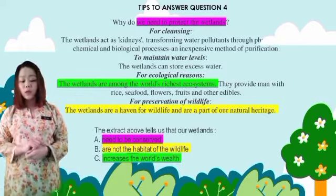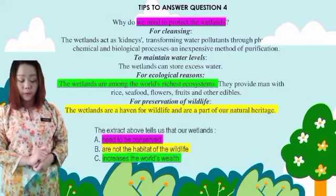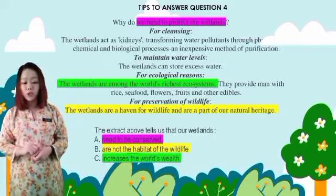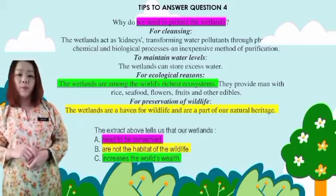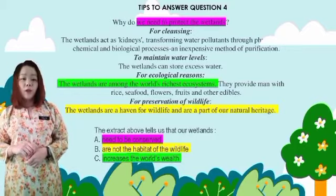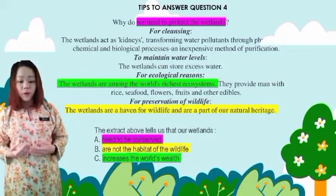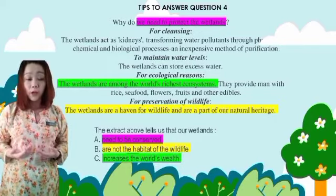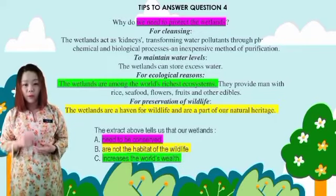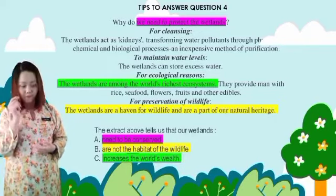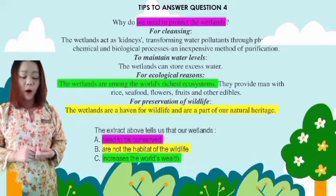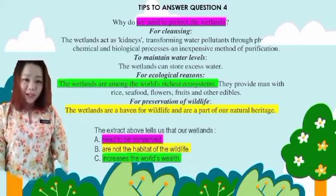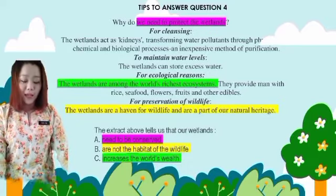Option C: increases the world's wealth. From the text, the wetlands are among the world's richest ecosystems. However, the text is talking about a rich ecosystem, not about wealth. Therefore, option C is incorrect, and the only correct answer is A.